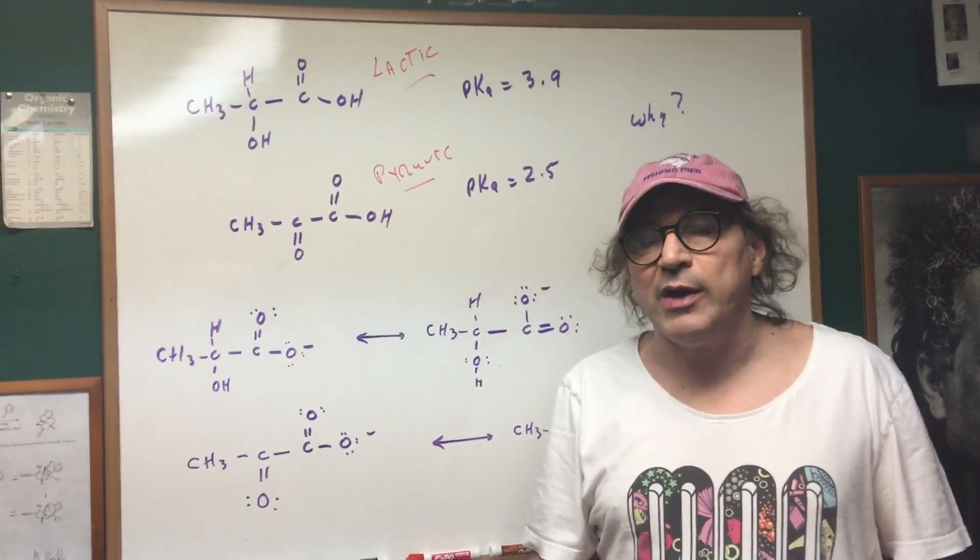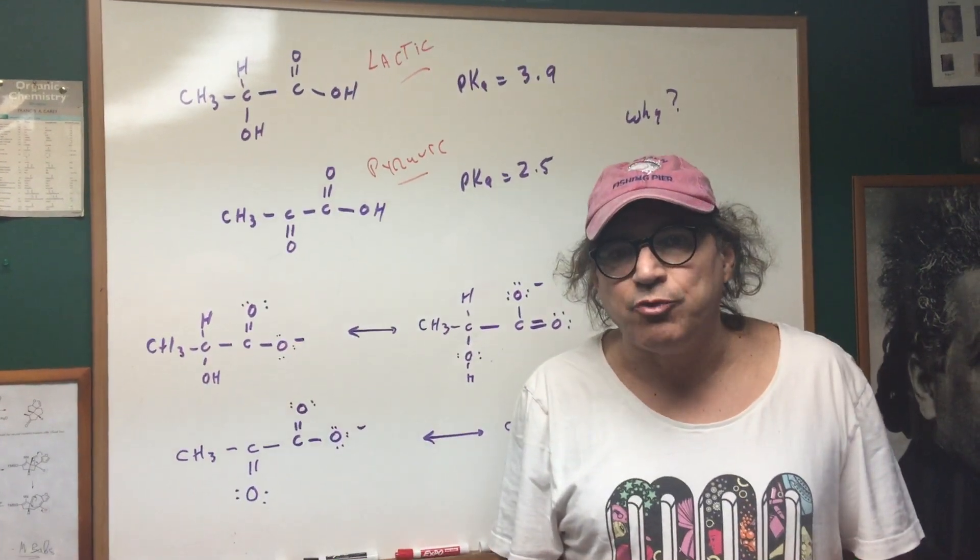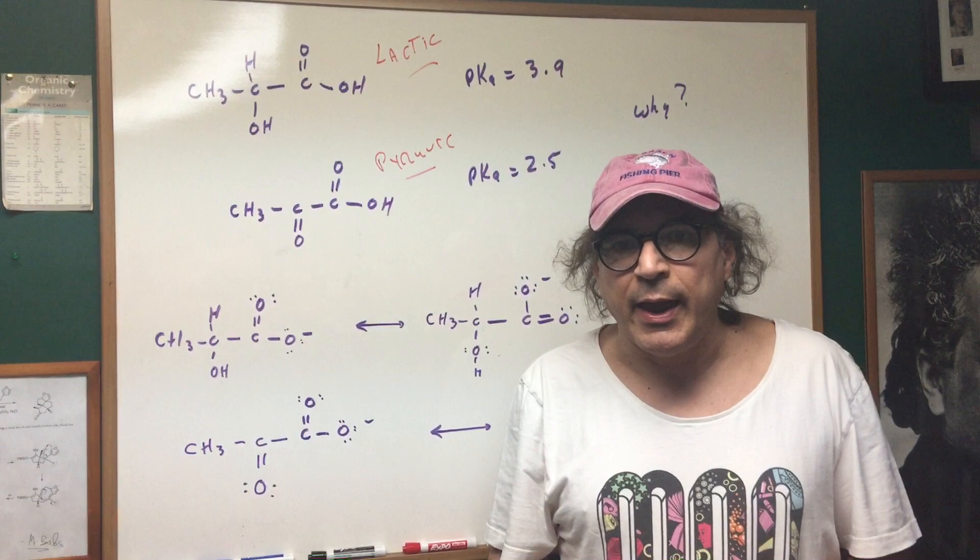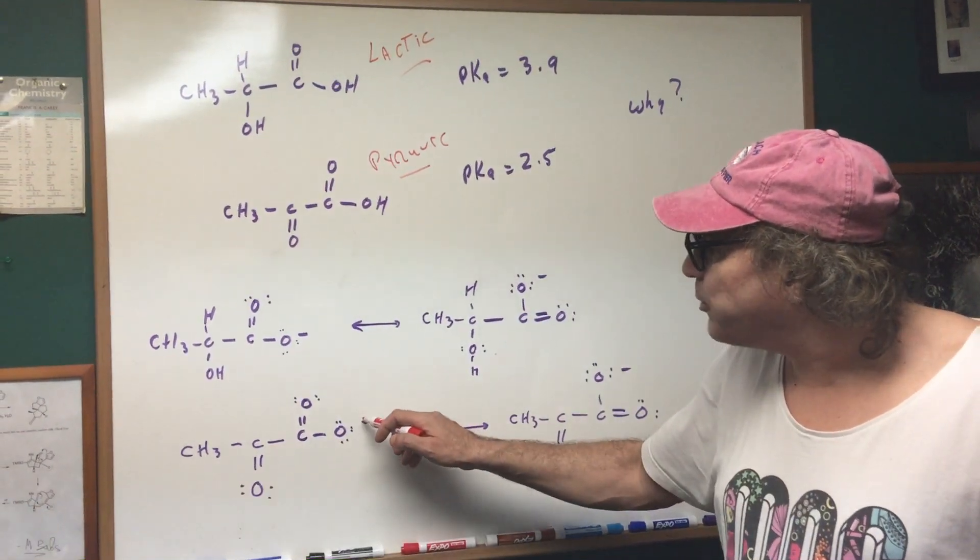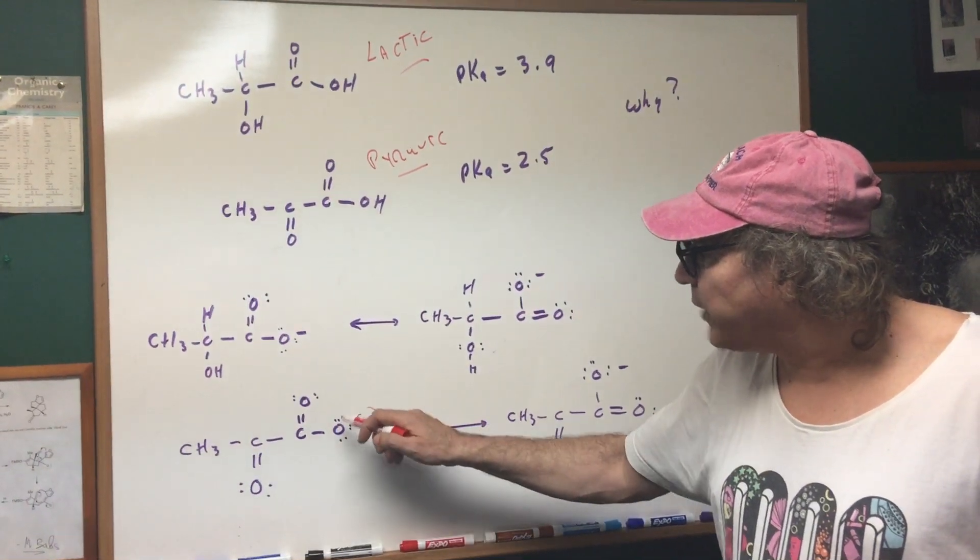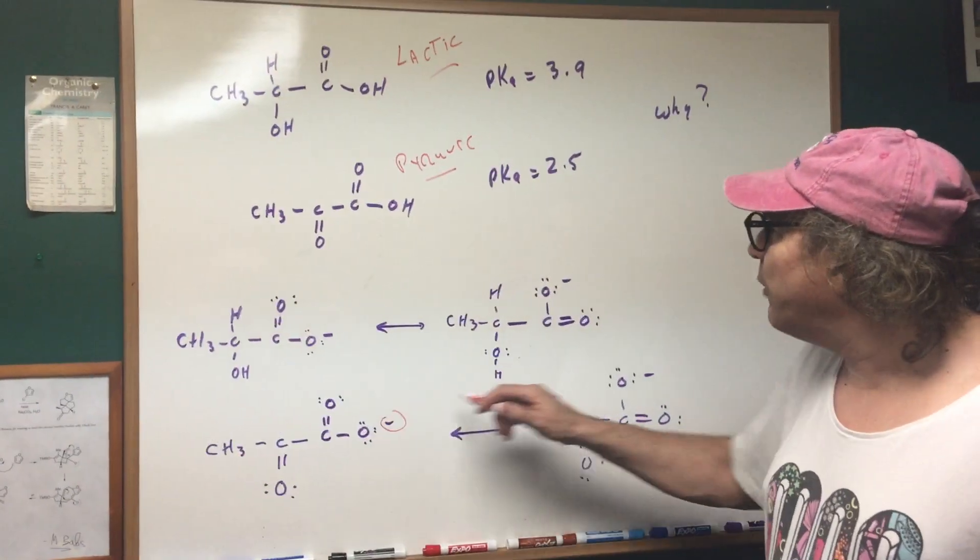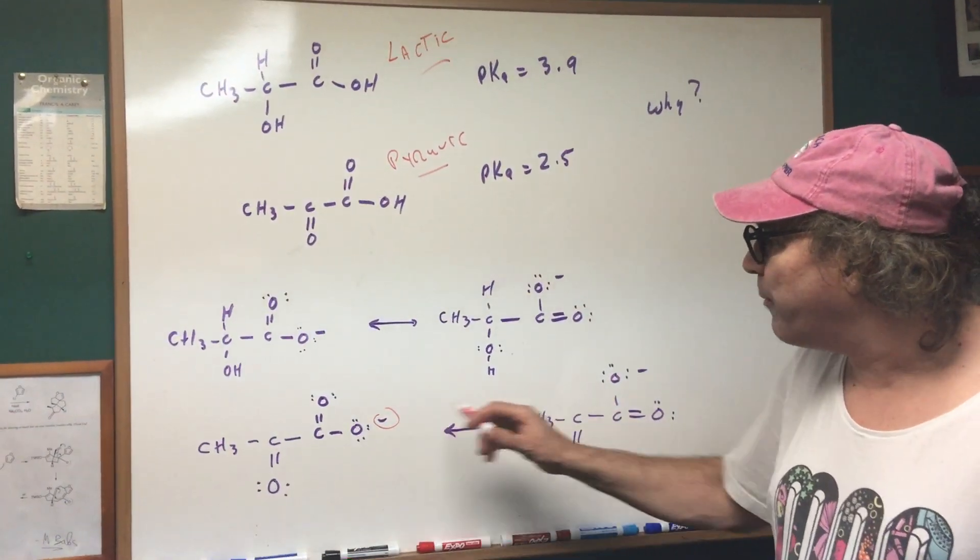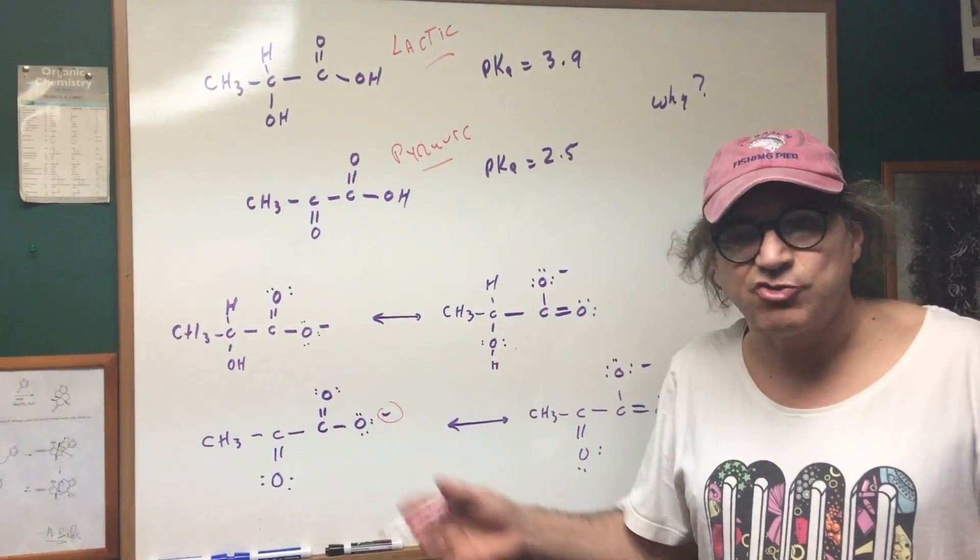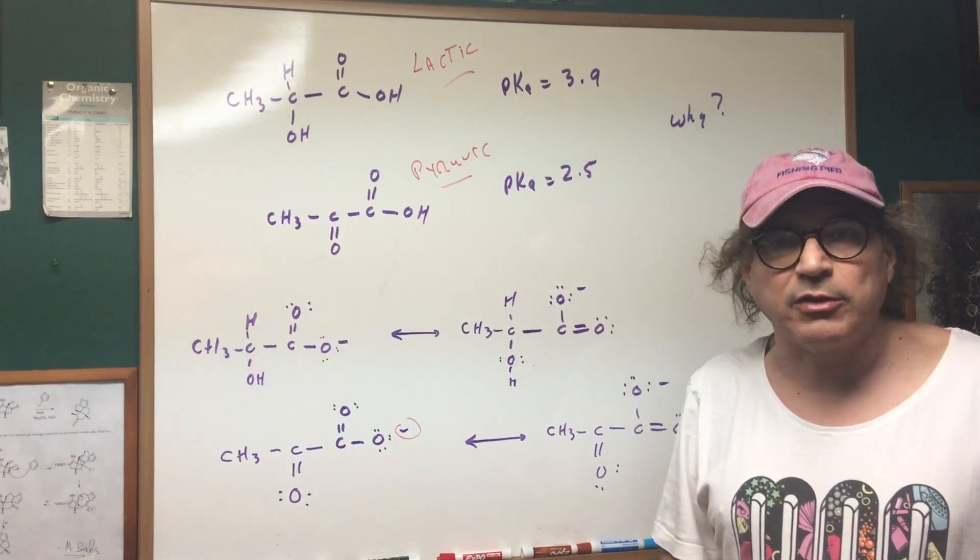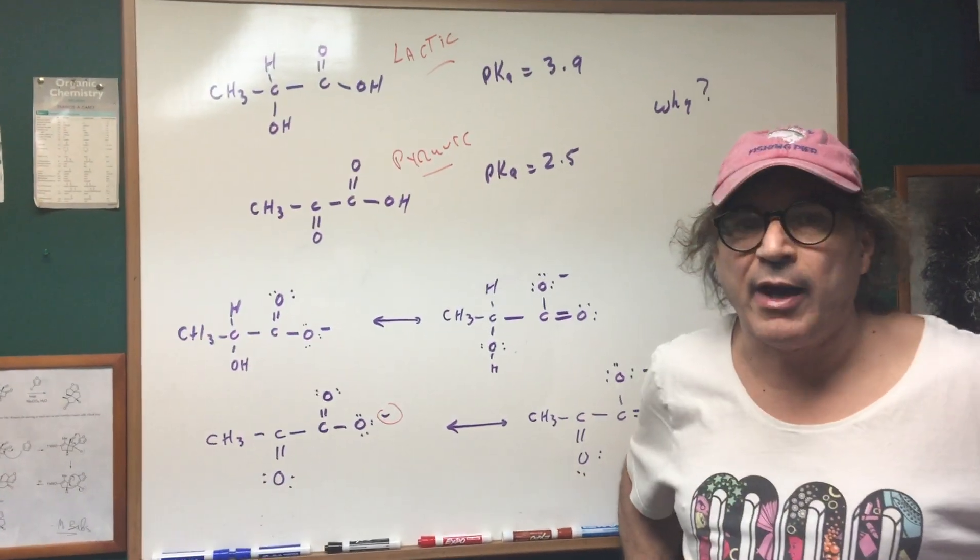So the inductive effect is going to help to withdraw electron density off of this oxygen. So therefore the anion of the pyruvic acid called the pyruvate anion would be more stabilized. It's got resonance just like lactate but it also has a greater inductive effect and therefore that inductive effect would account for the lower pKa value.